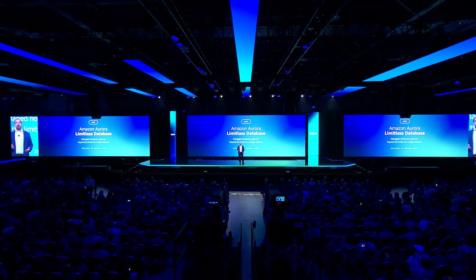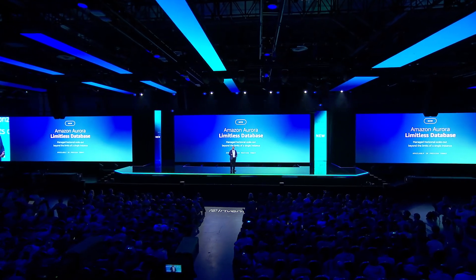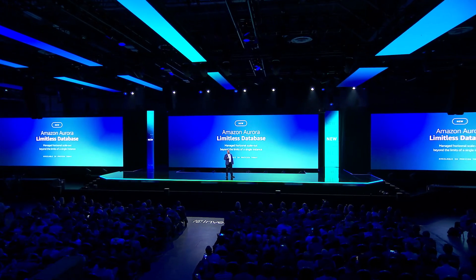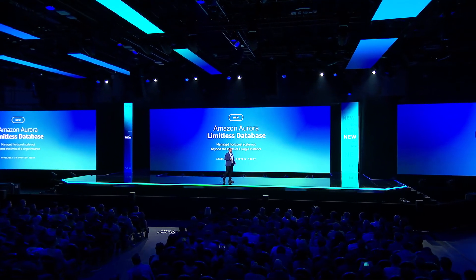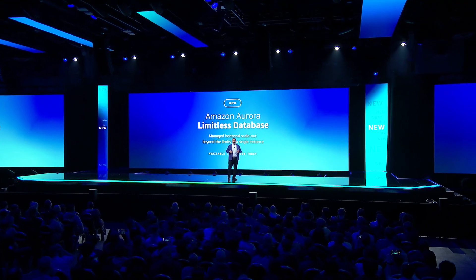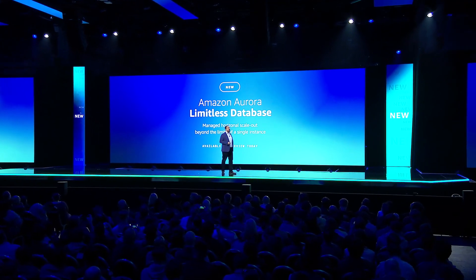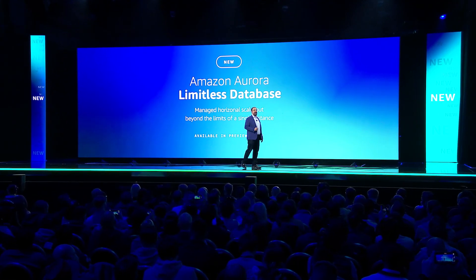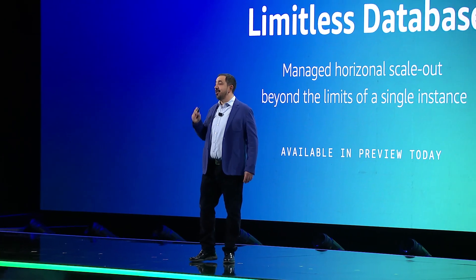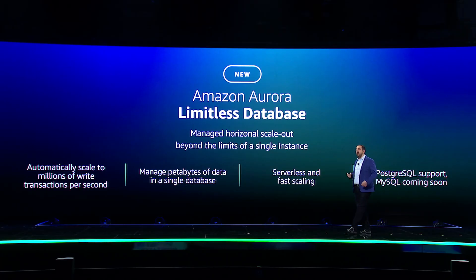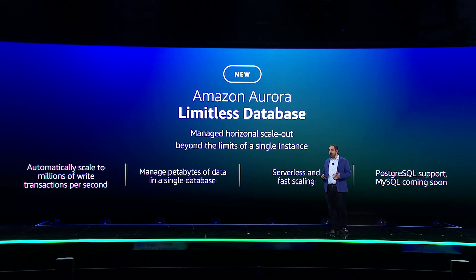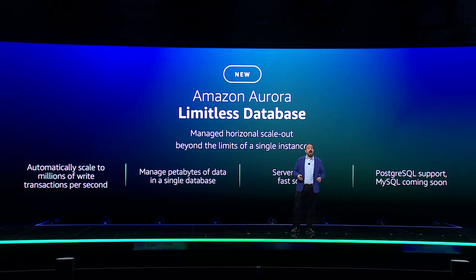Aurora Limitless Database makes it easy for customers to scale their database beyond the write throughput of a single server. With Limitless Database, there's no need to worry about the routing of your queries to the correct database shard. Your application just connects to a single endpoint and has the scalability of a sharded database. Aurora Limitless Database automatically distributes data across multiple shards, and you can configure it to co-locate rows from different tables in the same shard to minimize querying multiple shards and maximize performance.